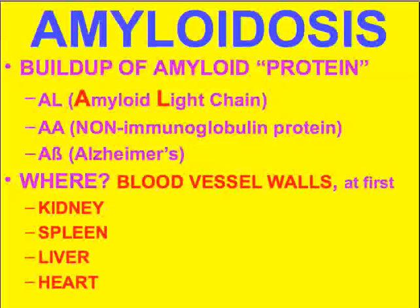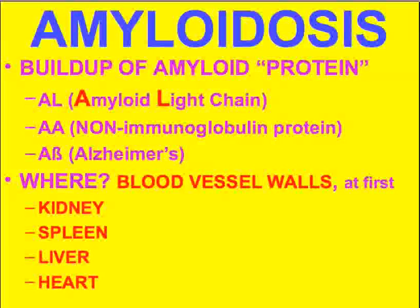As a general rule, amyloidosis is regarded as a buildup of immune proteins. The amyloid seen in Alzheimer's disease is called beta amyloid, which is a little different from the other two types, but it's still amyloid and shares certain immune features.